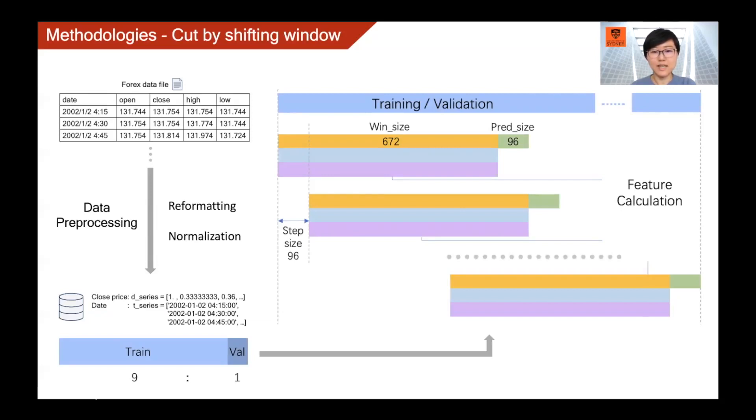For both sets, there will be a same set shifting window used to calculate features step-by-step from the head of the set to the end. Two parts are included in the shifting window. One is the input subset that is used to feed into the sequence-to-sequence model. It contains 672 data points, which is the volume of one-week data. The other is the output subset that contributes to the model training by comparing it with model prediction.